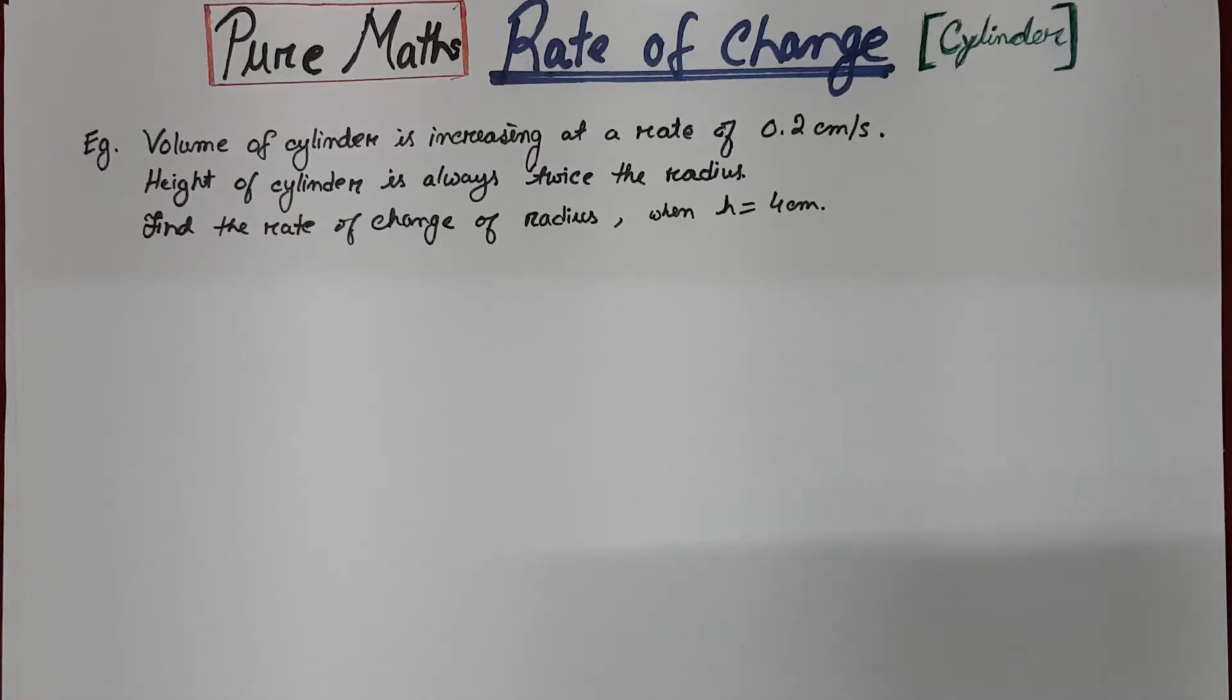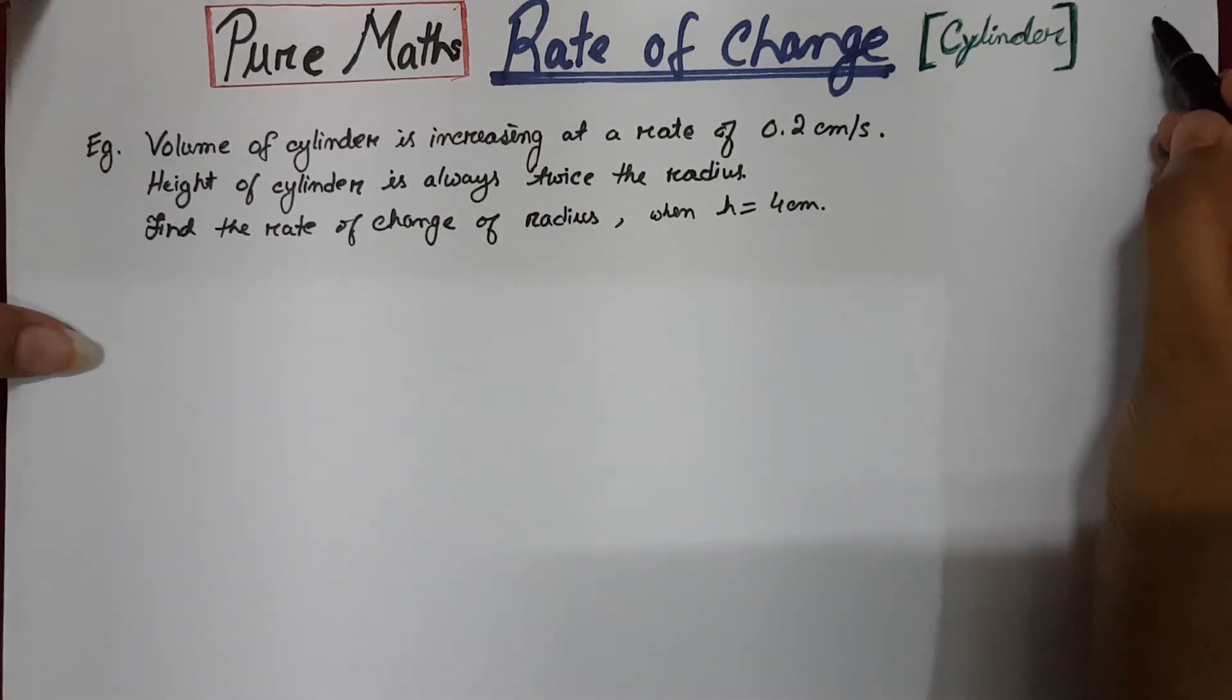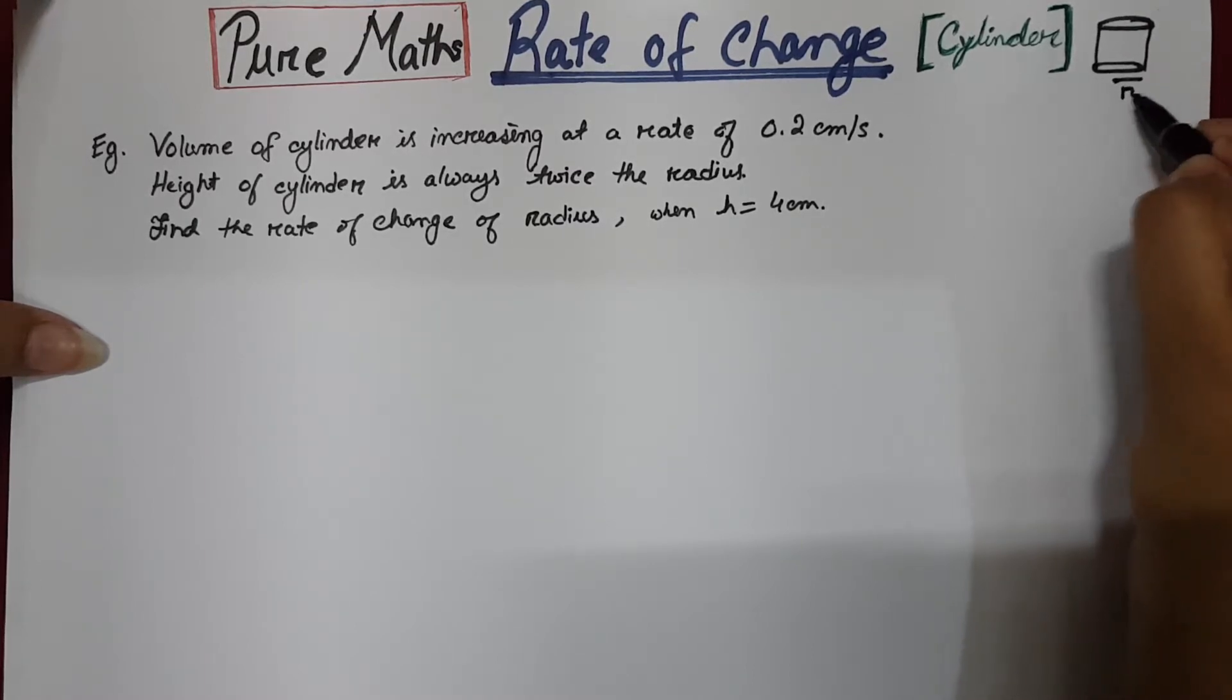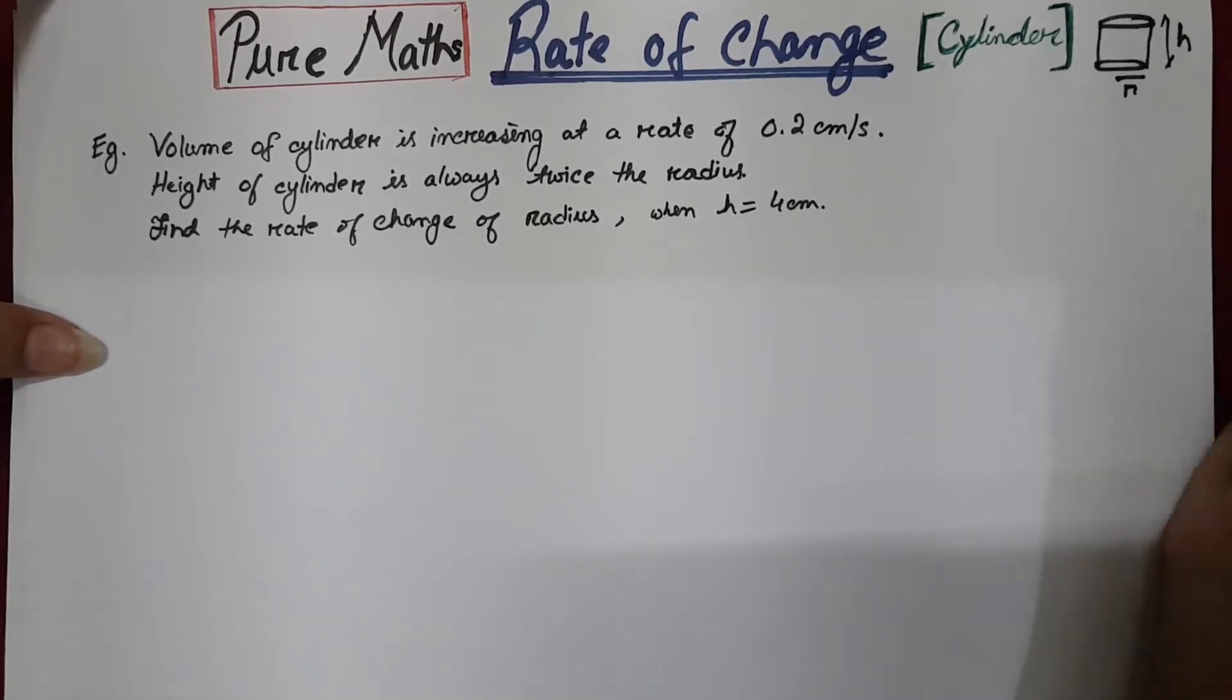Hello everyone, I'm Sadia Alam and this video is about the maths of rate of change of any circular object. Suppose you have a cylinder here, so the radius is r and the height is h.